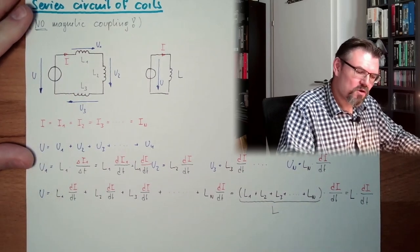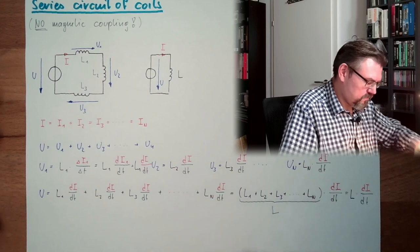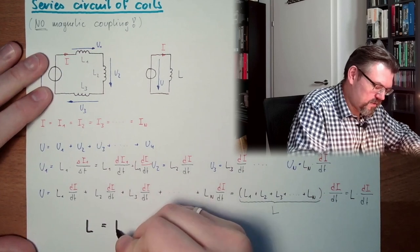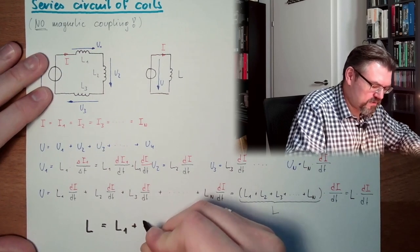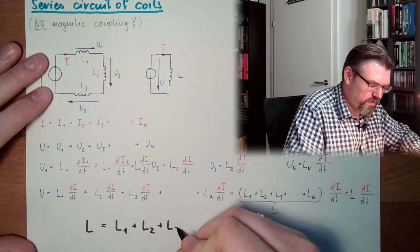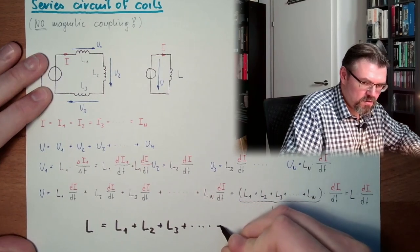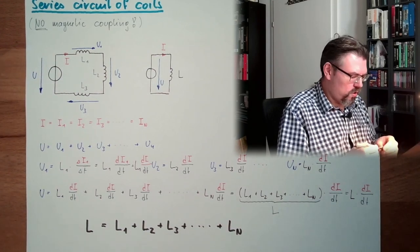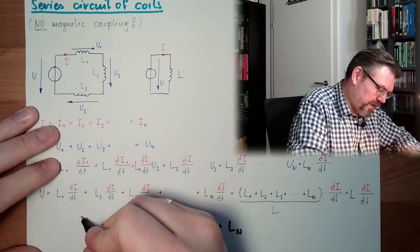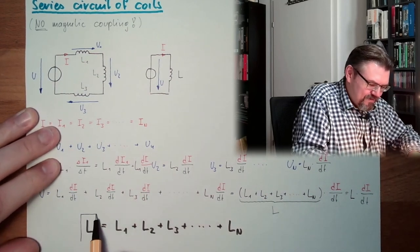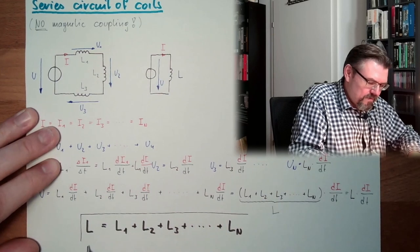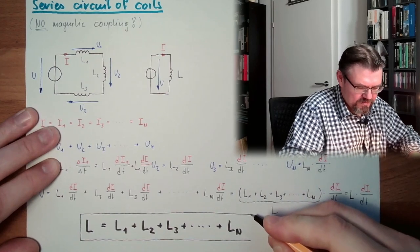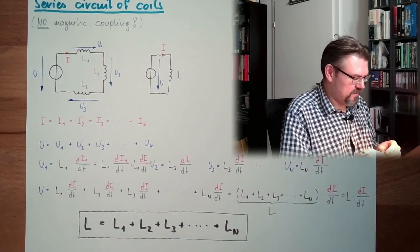This must be L. So my replacement coil is L1 plus L2 plus L3 plus and so on, plus LN. So it's the sum of all Ls. This is our replacement inductance. Sum of all inductances.